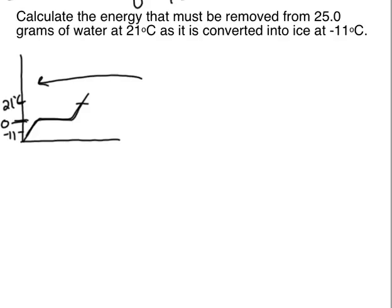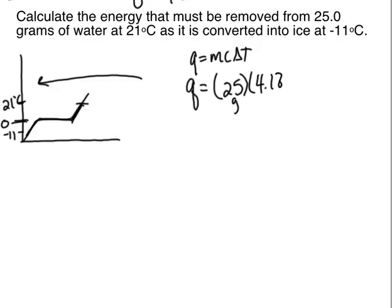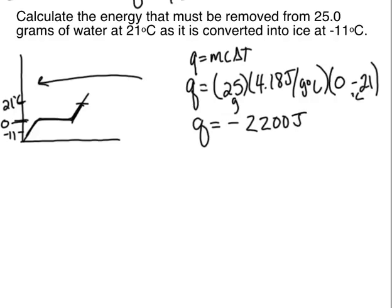Step one: Q = mcΔT. Mass is 25. The specific heat of liquid water is 4.18 joules per gram degrees Celsius. T final for that step is zero, T initial is 21. Q total to two sig figs for this step is negative 2,200 joules. Negative makes sense because energy is being removed.